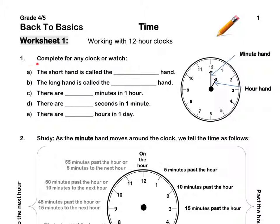Question 1. Complete for any clock or watch. The short hand is called the hour hand, as we see from the diagram. The short hand tells us what hour it is.